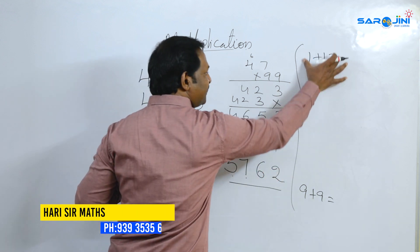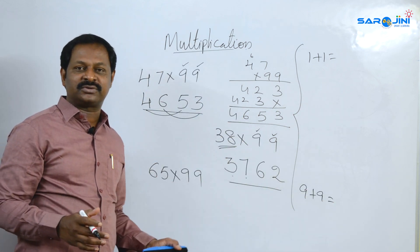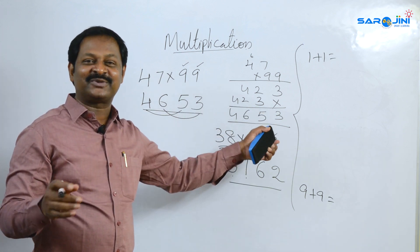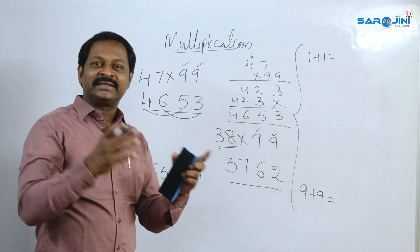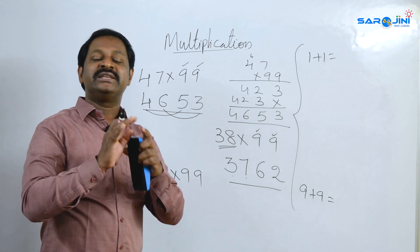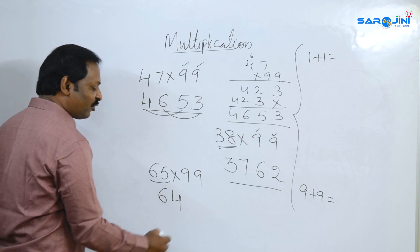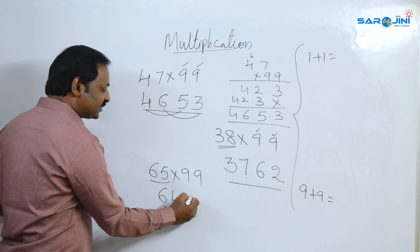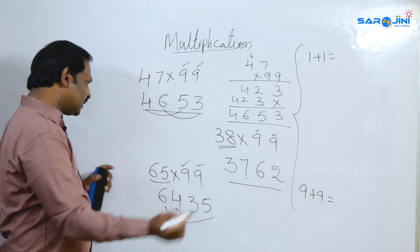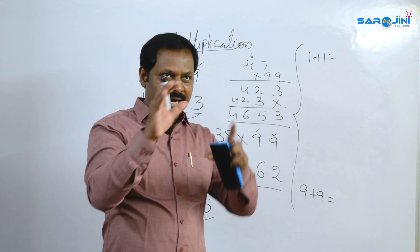Same addition pattern. Look at this table and practice. 1 plus 1 equals 2, 2 plus 2 equals 4, 3 plus 3 equals 6. Mathematics is a universal subject. For 65 into 99: one number is 64. 6 plus 3 is 9, and 4 plus 5 is 9. You will get the answer using the speed of mental calculation.